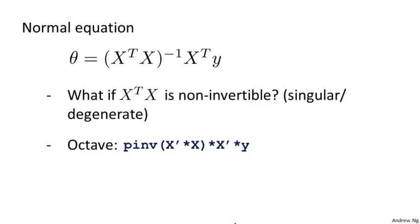For those of you that are maybe somewhat more familiar with linear algebra, what some students have asked me is when computing theta equals X transpose X inverse X transpose y, what if the matrix X transpose X is non-invertible? You may know that only some matrices are invertible and some matrices do not have an inverse. We call those non-invertible matrices singular or degenerate matrices.